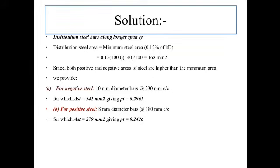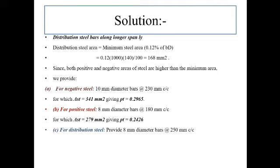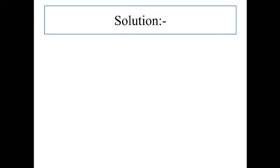AST provided equals area of one bar divided by spacing provided (180 mm), where area of one bar for 8 mm diameter is 50.26 mm², giving 50.26 divided by 180 multiplied by 1000 = 279 mm². This gives Pt = 0.2426%. Since this Pt is less than our initially assumed 0.6%, it is again safe for deflection. Next, provide 8 mm diameter bars at 250 mm center to center as distribution reinforcement, giving AST provided as approximately 201 to 210 mm².